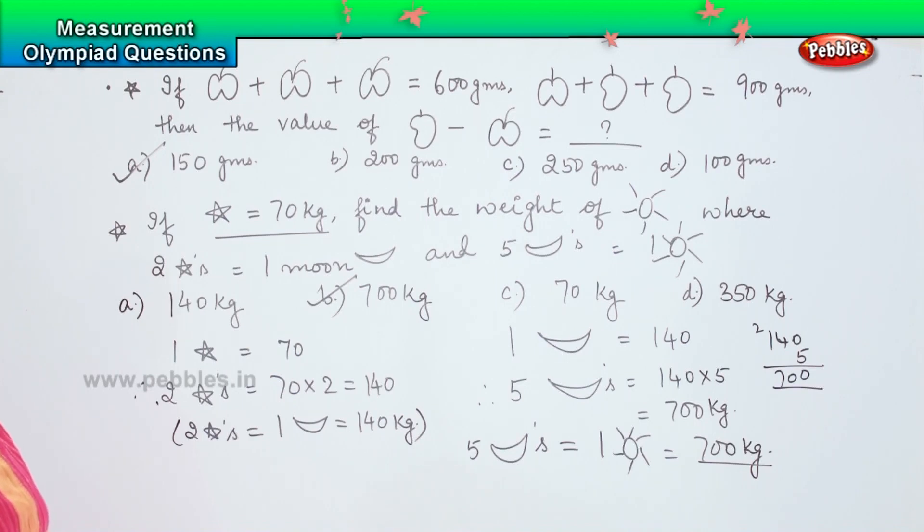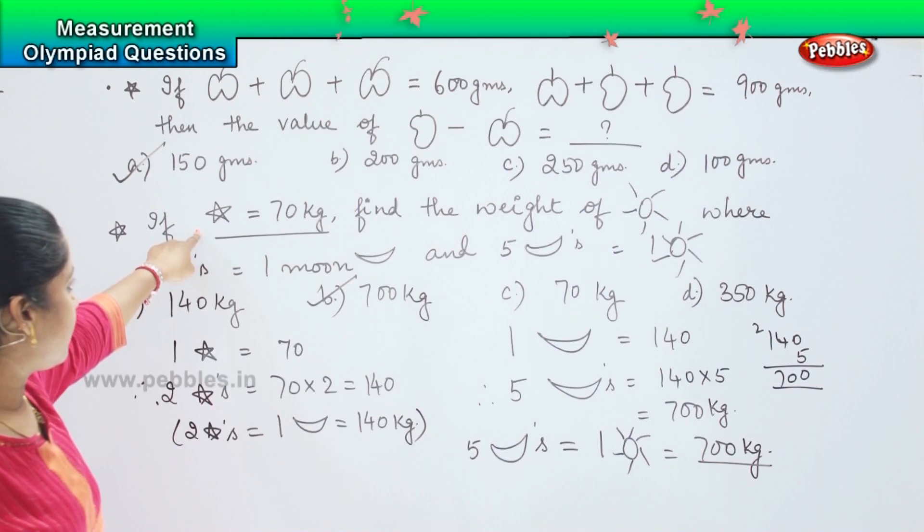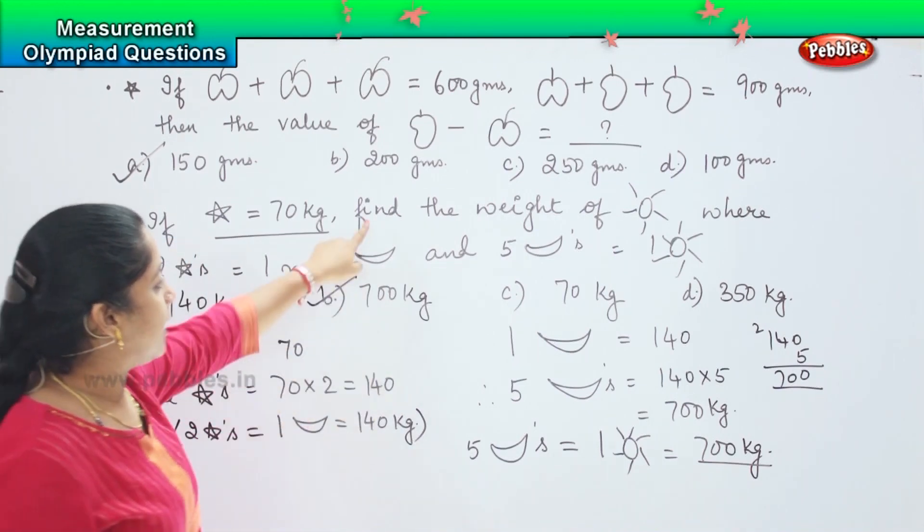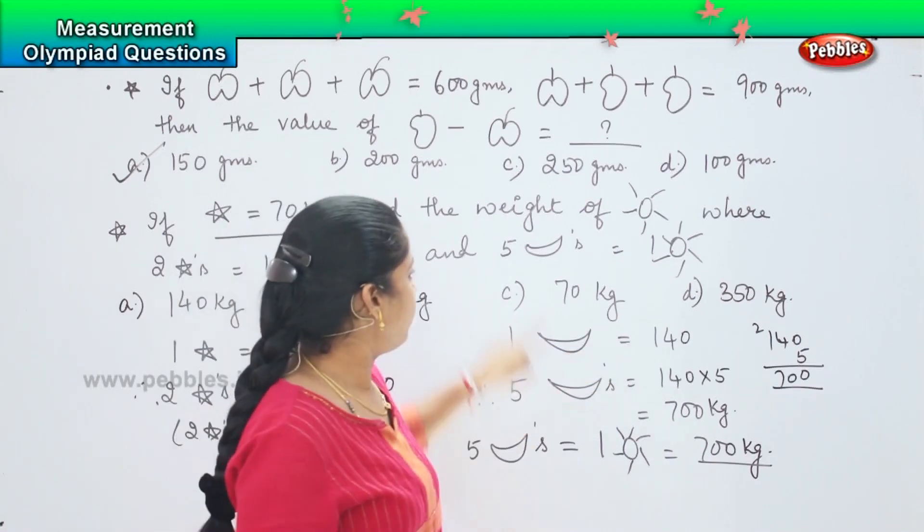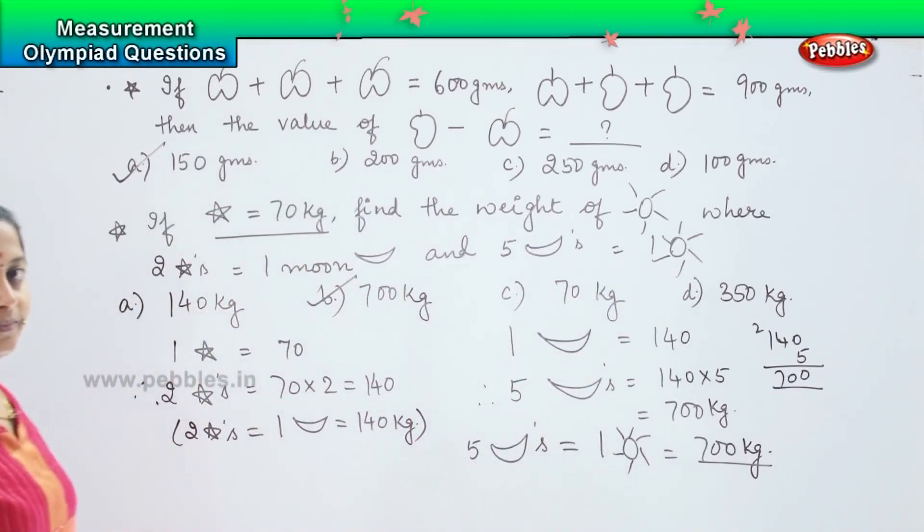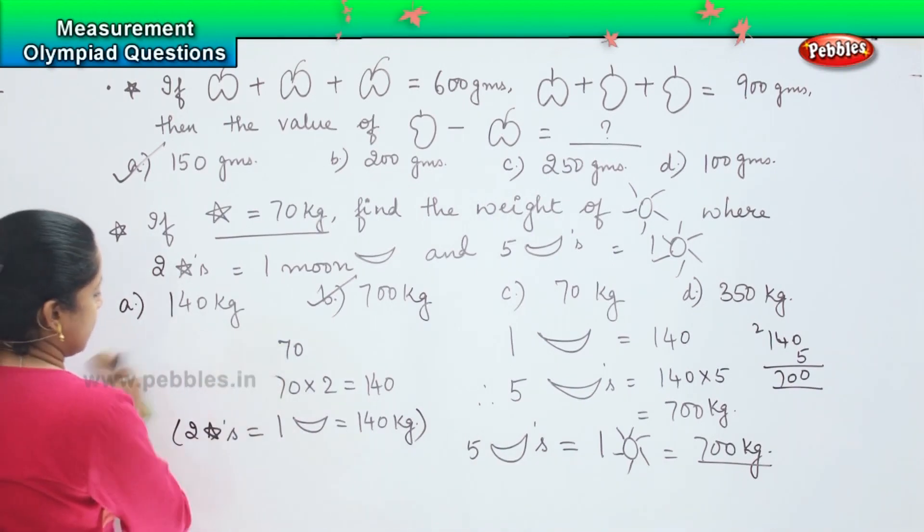Did you understand this? It was little tricky. So how did we find out? First, we calculated the value of two stars where we got the value of the moon, and then we multiplied the value of the moon five times to get the value of the sun. Is it clear? Shall we proceed further?